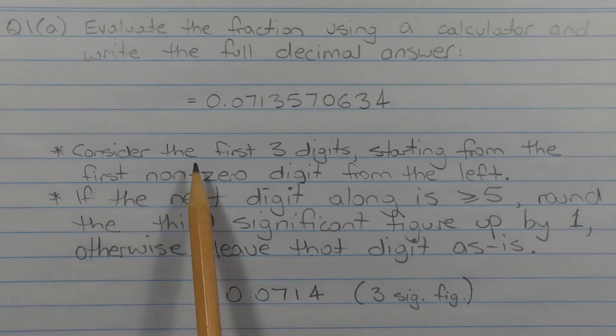The next step is to consider the first three digits starting from the first non-zero digit from the left-hand side. And that's 7, 1, and 3. And these are the three significant figures in this decimal.